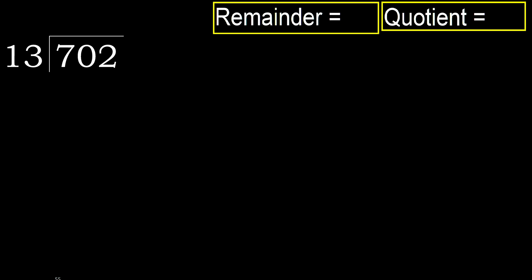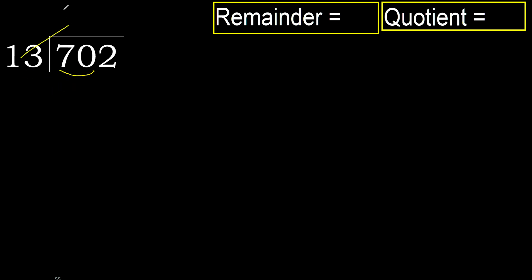702 divided by 13. 7 is less, therefore next. 70 is not less, therefore work with 70. 13 multiplied by which number is nearest to 70 but not greater?